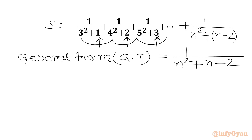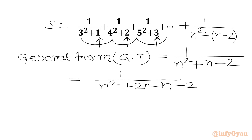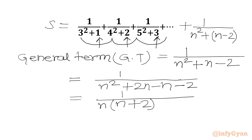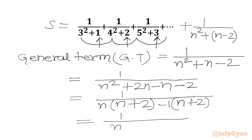Can we factor our denominator? Yes, we can. We write n² + n - 2, then split n as 2n minus n: n² + 2n - n - 2. Taking n common from (n² + 2n) gives n(n+2), and taking -1 common from (-n - 2) gives -1(n+2). So the denominator factors as (n+2)(n-1), giving us 1/[(n+2)(n-1)].